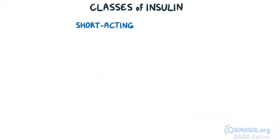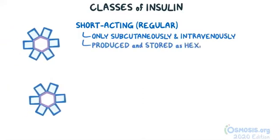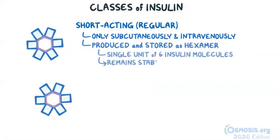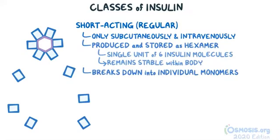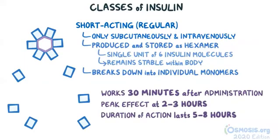Next are the short-acting insulins, or regular insulin, which is the only type of insulin that can be given subcutaneously and intravenously. Regular insulin in the body is generally produced and stored as a hexamer — a single unit of 6 insulin molecules — which allows it to remain stable and break down into individual monomers to become active. Thus, regular insulin only begins working 30 minutes after administration, with a peak effect at 2-3 hours and a duration of action lasting 5-8 hours. Besides diabetes mellitus, it can be used to treat hyperkalemia.